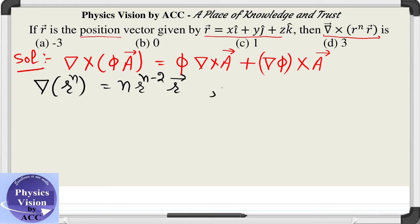And the third formula we'll be making use of is del cross r is 0, curl of r is 0.